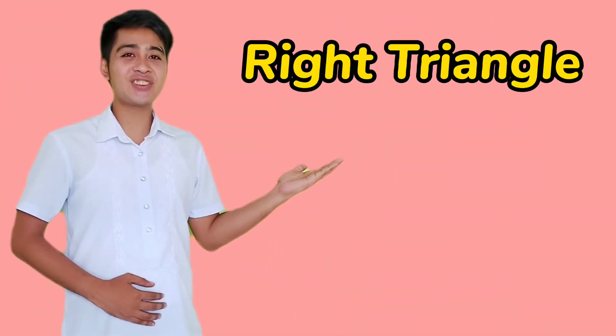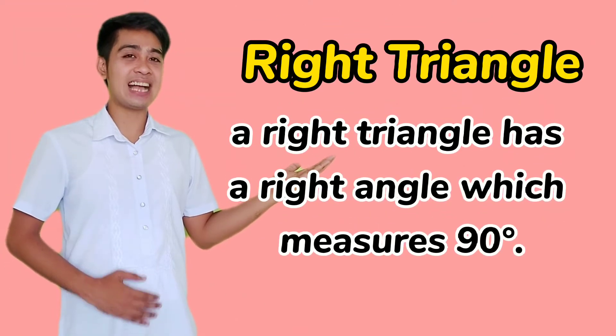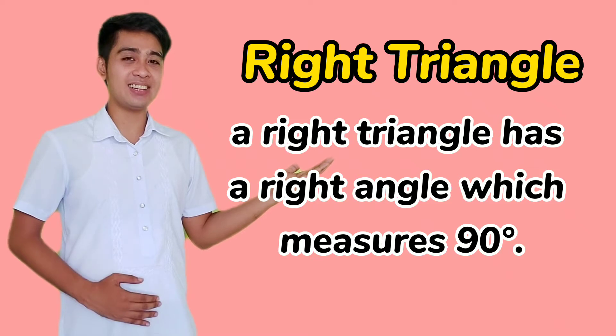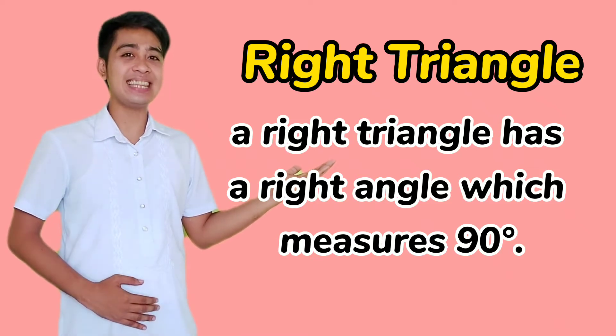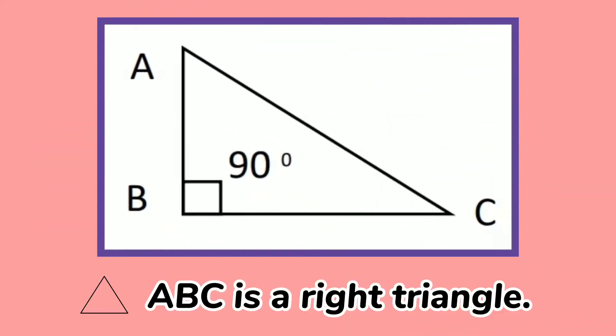The first one is the right triangle. A right triangle has a right angle, which measures exactly 90 degrees. For example, triangle ABC is a right triangle.